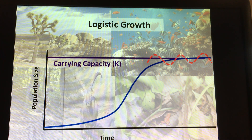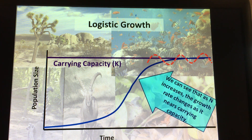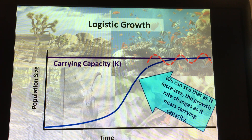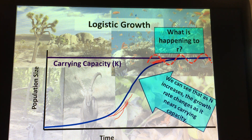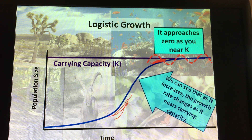Once a population stabilizes, you have something called carrying capacity. As N — the population size — increases, the growth rate changes as it nears carrying capacity. You can see a steep growth rate early on, but as you get close to carrying capacity, R, the growth rate, is going to be quite a bit smaller. There are fewer being born than during exponential growth. As you move towards carrying capacity, the growth rate actually gets closer and closer to zero.